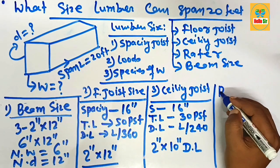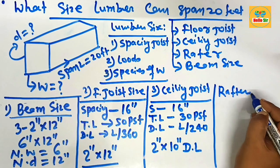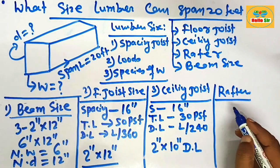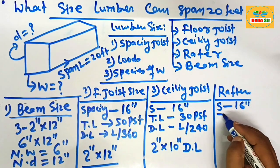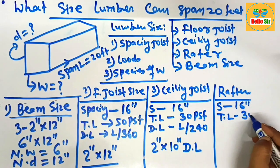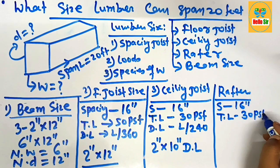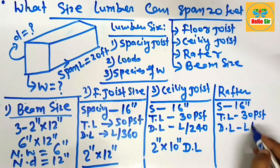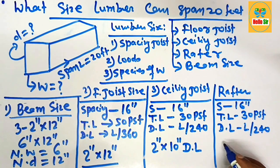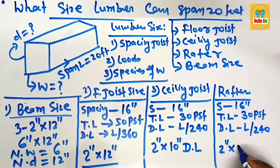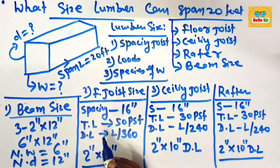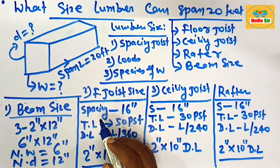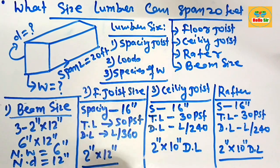Now understand what size rafter you need to span 20 feet. The spacing condition is 16 inches, the total load of the structure is 30 PSF, and the deflection limit is L/240. You can use 2-inch by 10-inch dimensional lumber as a rafter to span 20 feet. These are the several lumber sizes that can span 20 feet. Thank you.